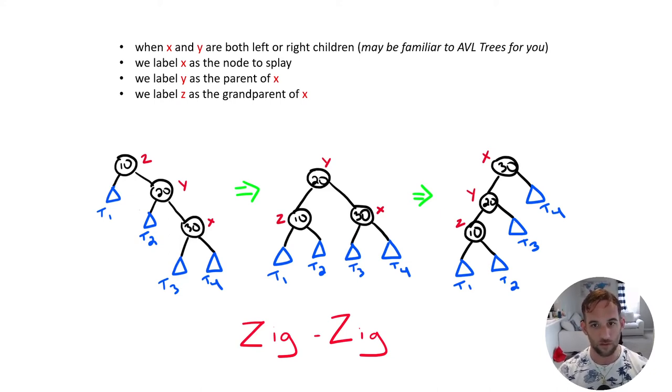So right now, z is the root or node 10. So we're going to perform a left rotation and then another left rotation. And then at the end, x is now the root of the tree. And this is the zigzag. So this is when the x and y are both left or both right children.